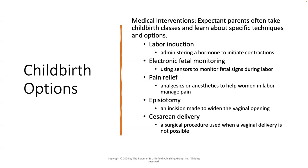There's also electronic fetal monitoring, which uses sensors to monitor fetal signs during labor. This can be placed around the belly, or as a probe attachment that goes onto the top of the fetus's head through the cervix. There's also pain relief through anesthetics to help manage pain during labor. Episiotomy is an incision made to widen the vaginal opening, supposedly to help baby come out more easily and to prevent tearing — though I do encourage you to do your own research and form your own opinions on whether the evidence supports this.